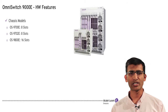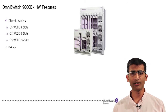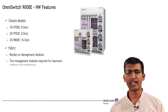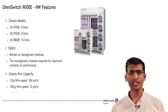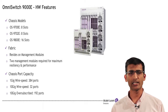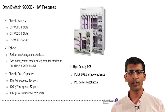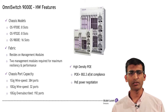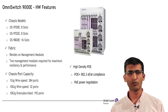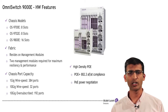Let us zoom into some of the key hardware features. The OmniSwitch 9000E family of switches offers 3 chassis options between 8 slots and 16 slots to fit all IT needs while offering flexibility. The OmniSwitch 9000E chassis enables smart continuous switching for non-stop operation with redundant chassis management module configurations.